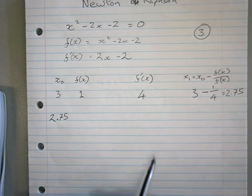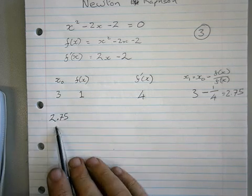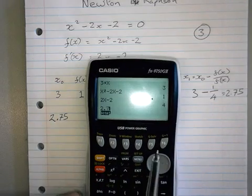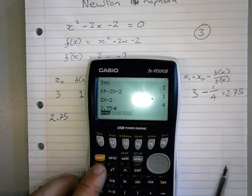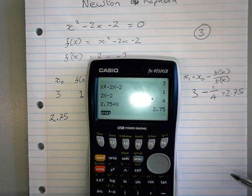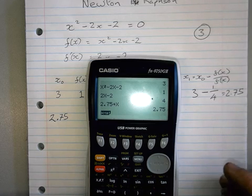So the next bit then I'm going to now say is, it's not 3 anymore. It's now 2.75. So what I'm going to do on my calculator is I'm going to put 2.75 into x. And it now tells me 2.75. And now I'm going to do exactly the same again just using 2.75.